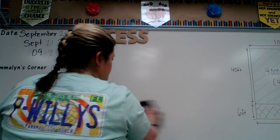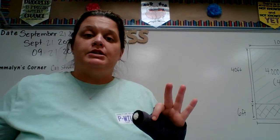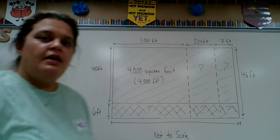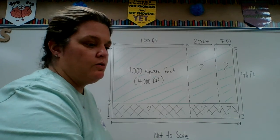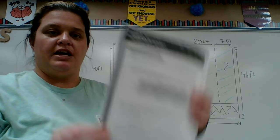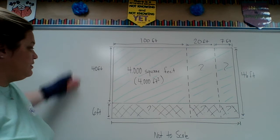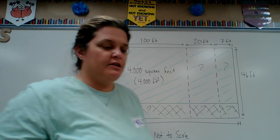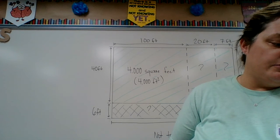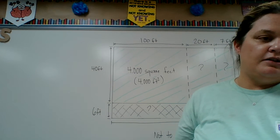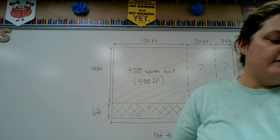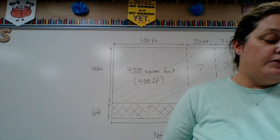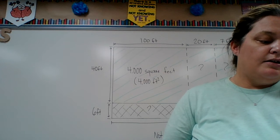All right. Now, in fifth grade, what we're going to be working with is three digits by two digits. So this is the same exact problem that you have in your packet — I just blew it up a little bit. It says a mall is designing an outdoor space. The available space is 127 feet by 46 feet. The plan is for a grassy section with a width of 40 feet. Next to the grass will be a cement sidewalk with a width of 6 feet. What is the area of the available space in square feet?